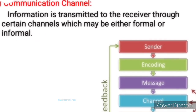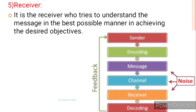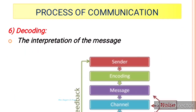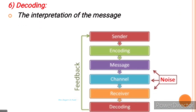The fifth step is the receiver — an individual or group intended to receive, decode, and interpret the message sent by the sender. The receiver is also known as the decoder. The sixth step is decoding, where the person who receives the message converts it in such a way as to extract its meaning to their complete understanding — that is, interpretation of the message.